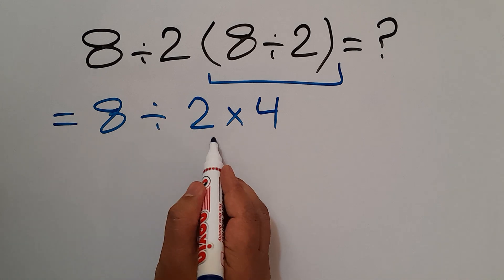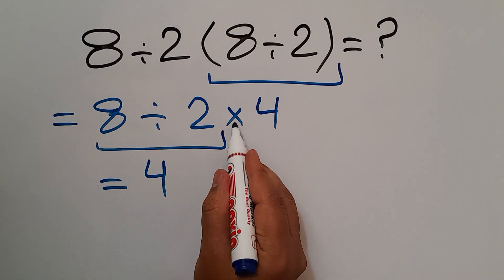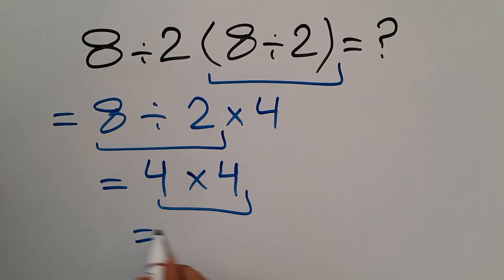So we have 4 times 4, and 4 times 4 is just 16. So our final answer to this problem is just 16.